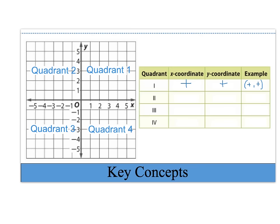In quadrant 2, all the numbers on the x-axis are negative, so our x-coordinates are negative. The y-coordinates in quadrant 2 are all positive. So the ordered pairs in quadrant 2 would be negative, positive. In quadrant 3, the x-coordinates are all negative and the y-coordinates are also all negative, so our ordered pairs would be negative, negative.